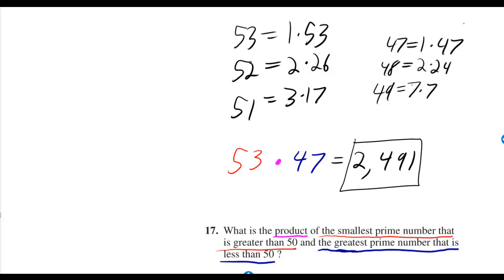Same line of reason for 49, 48, and 47, therefore 47 is the greatest prime number that's less than 50.